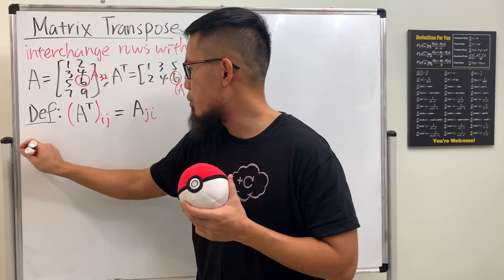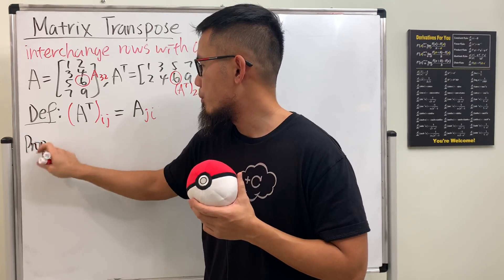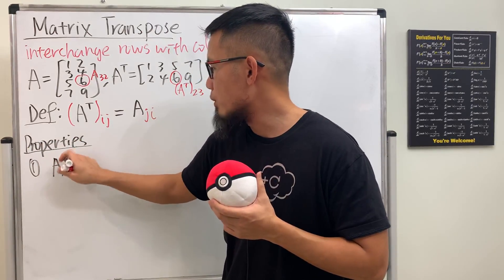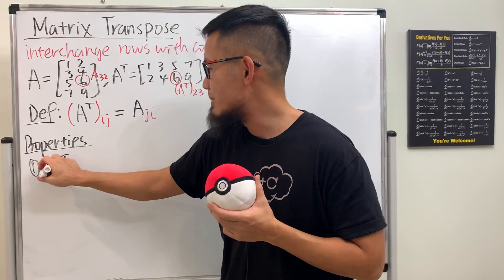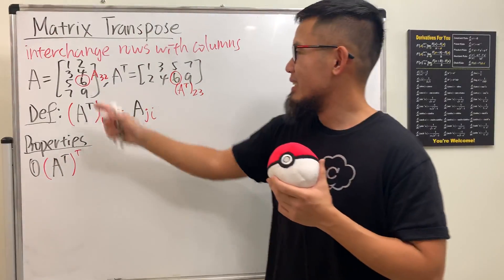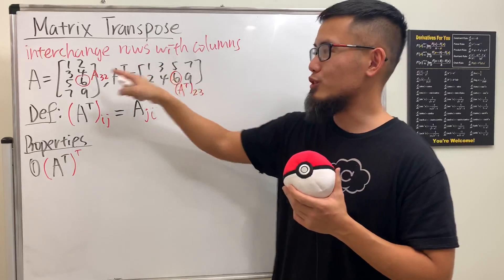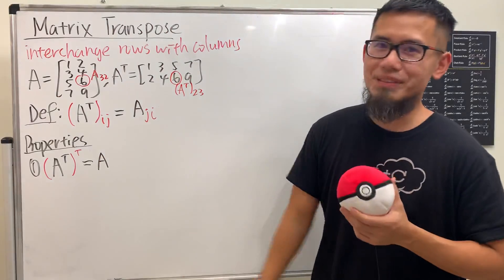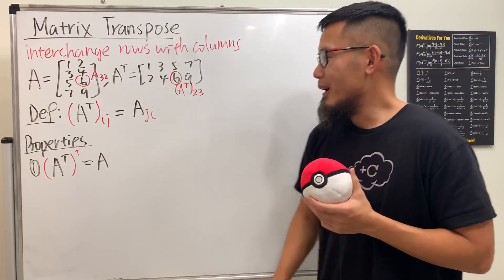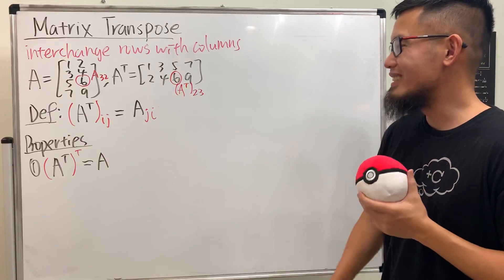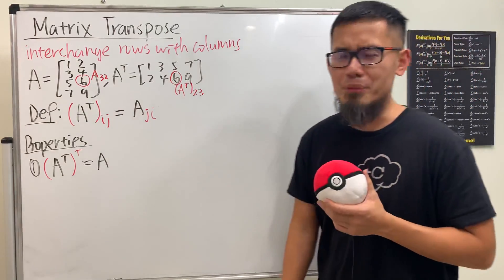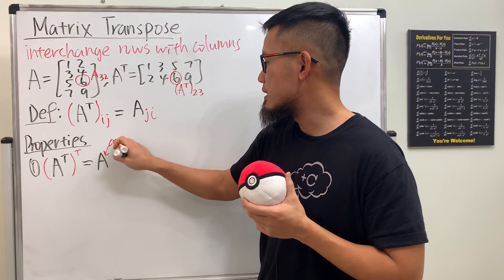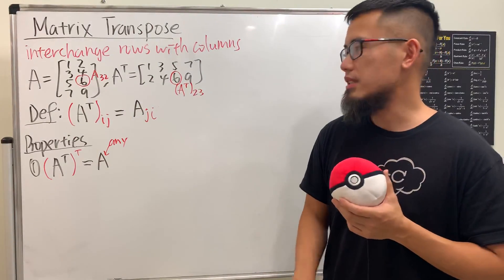Here are some properties you should definitely know. Property one: imagine if you have A transpose already, but you do the transpose again. If we do the transpose twice, we pretty much just go back to the original. I think it's pretty clear so I'm not going to prove that — proofs for super obvious statements are actually pretty hard. This works for any matrix, not just square matrices.